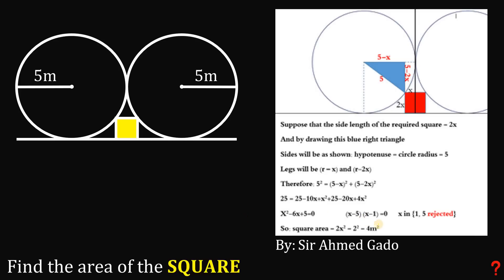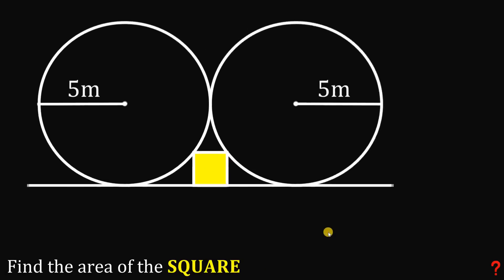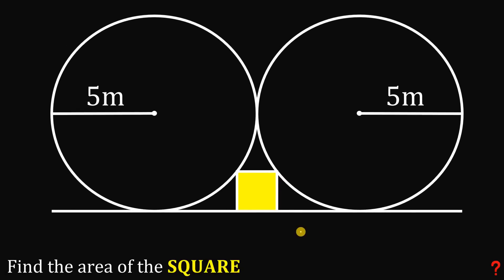Now let's begin our solution and see if we get the same result: four square meters. To answer this kind of question, we will focus on the important points — the tangent points: tangent circle to circle, tangent circle to the segment, and also the intersection of the square and the circle.